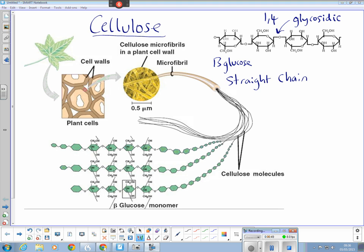Alternate glucose molecules are inverted, and you can see that here with this CH2OH group being on one side. The next beta glucose molecule has been flipped upside down, and so on. So we have inverted beta glucose molecules.